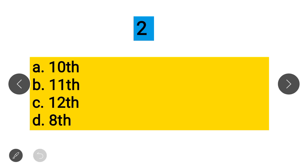Question 2: Languages are given in which Schedule? Option A: 10th Schedule, Option B: 11th Schedule, Option C: 12th Schedule, Option D: 8th Schedule. The correct answer is the 8th Schedule, where all languages are mentioned. How many languages are there? 22.